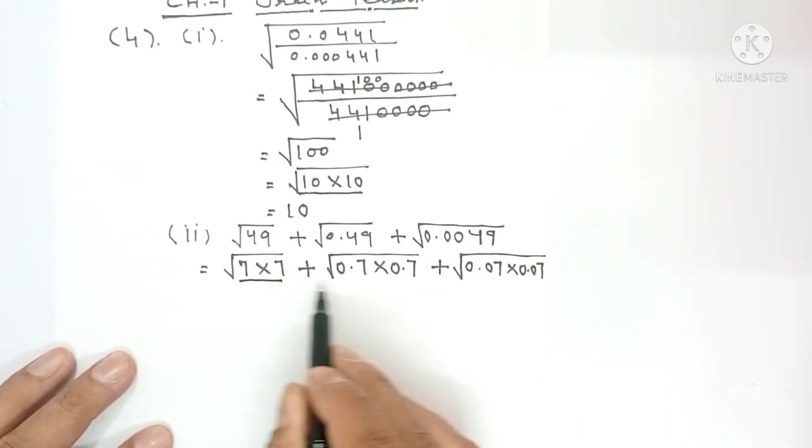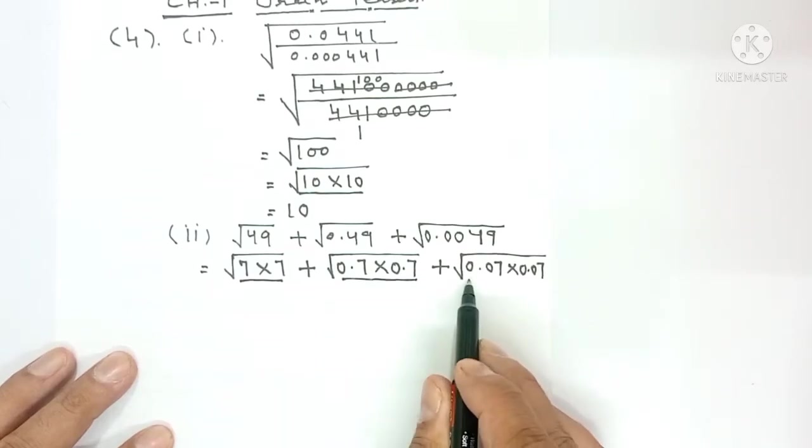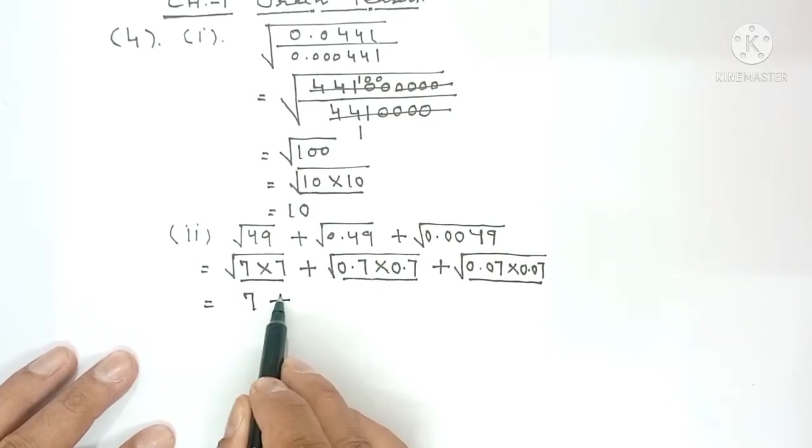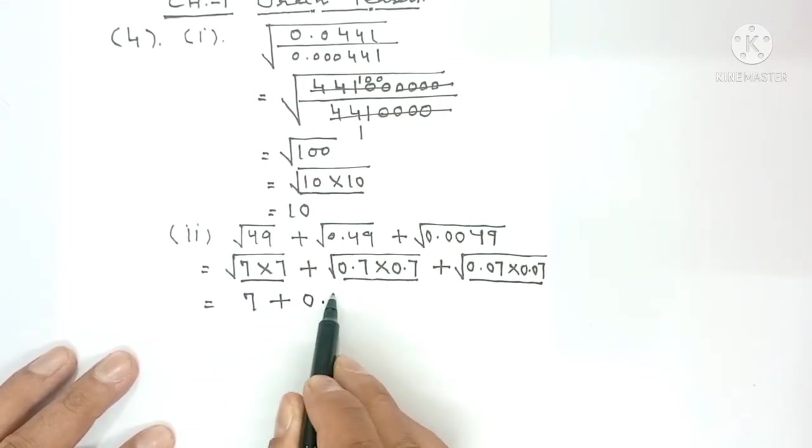Now make a pair from each: one pair here, one pair here, one pair here. From this pair you get 7 once, from this pair 0.7 once, and from this pair 0.07 once.